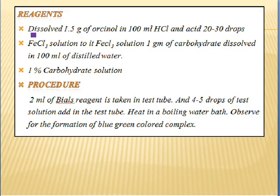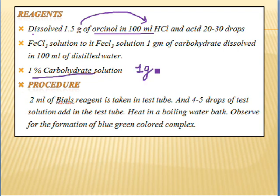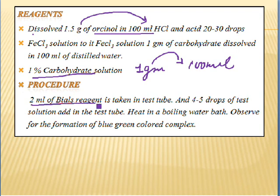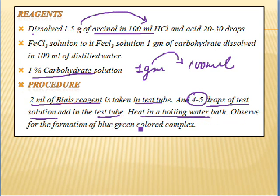The reagent is made up of orcinol dissolved in concentrated HCl. The other component is a 1% carbohydrate solution, meaning one gram of carbohydrate dissolved in 100 ml of water. For the procedure, 2 ml of Bial's reagent is taken in a test tube, and four to five drops of the test solution (ribose) are added. It is then heated in a boiling water bath, and after some time there is appearance of a blue-green colored complex with ribose, whereas glucose and galactose give a brownish color.